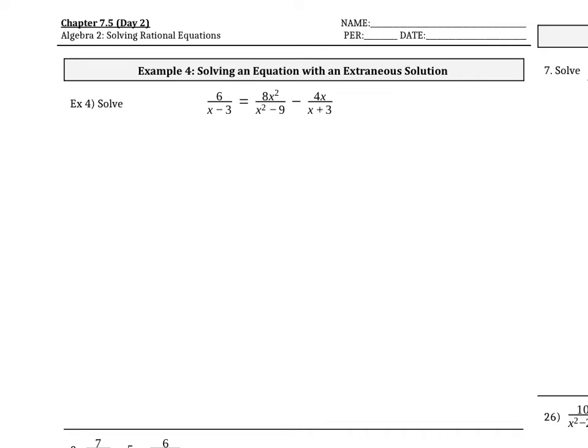Chapter 7.5 day 2, we're looking at solving an equation with an extraneous solution. The very first thing you're going to do is factor denominators if needed. Looking at this example, we notice x minus 3 and x plus 3 are fine, but x squared minus 9 we can factor. Remember that's a difference of two squares, so this is x minus 3 times x plus 3.